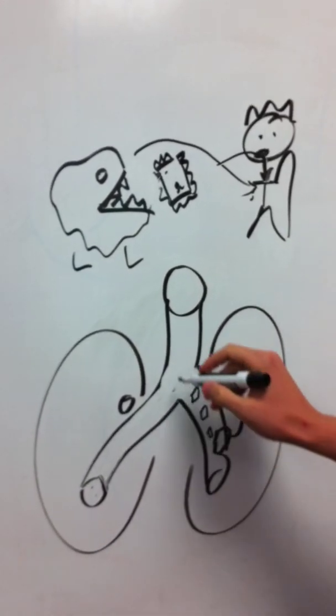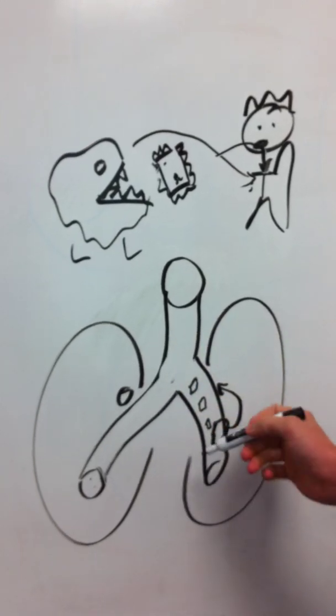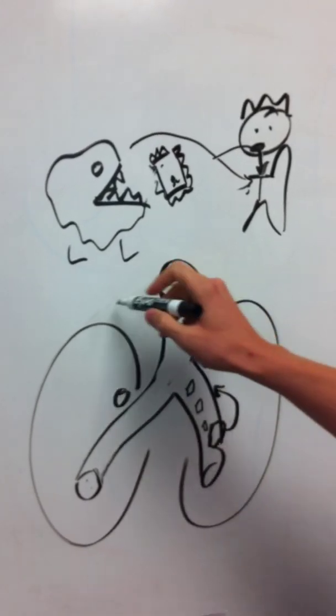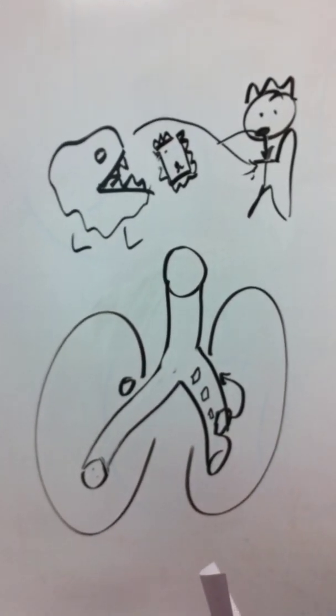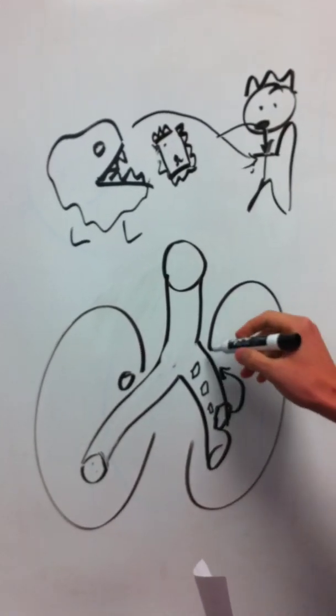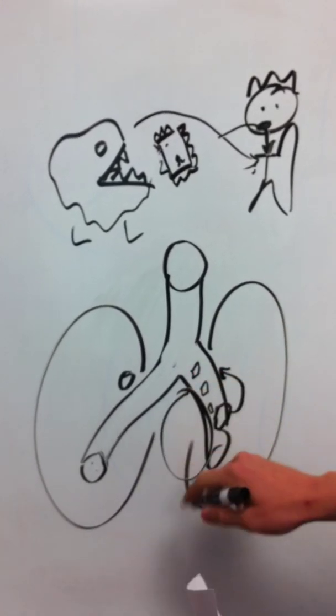Once they produce the exotoxin, this is a very vascular area. You're going to get bacteria and exotoxin spilling systemically and giving you bacteremia. Another thing that's going to happen is you're going to start having cell death, which is going to result in hemorrhage.